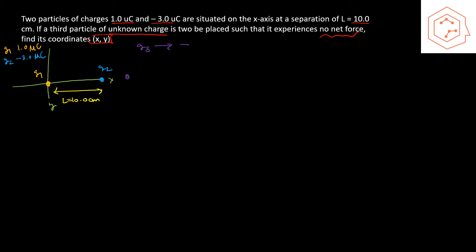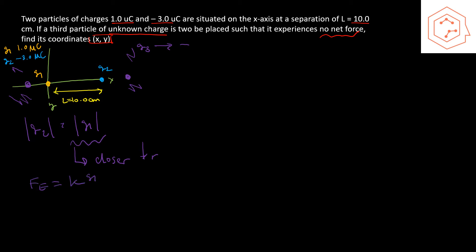So q3 must be either to the right of q2 or to the left of q1. Since q2 is larger in magnitude than q1, we need to be closer to q1 so that the smaller distance r gives us a larger force. By Fe = k·q1·q2/r², we need to be closer to q1 to balance out the forces, since the force from one charge must equal the force from the other.